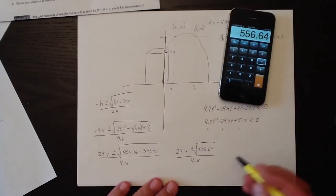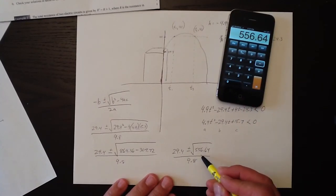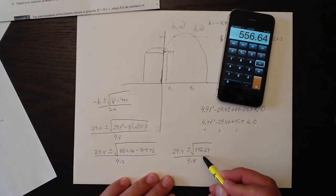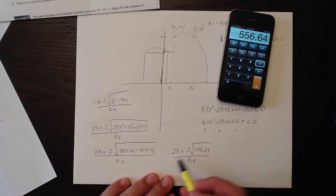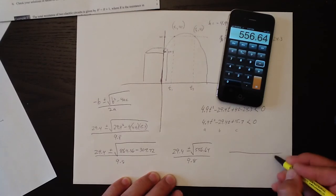29.4 plus or minus the square root of 556.64 over 9.8. So on the number line though, because I don't have the square root function on this, I know that it's going to be in the ballpark of 24 or something like that. So this will be somewhere around 50 over 9.8.